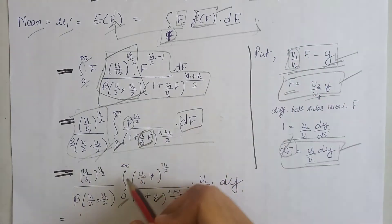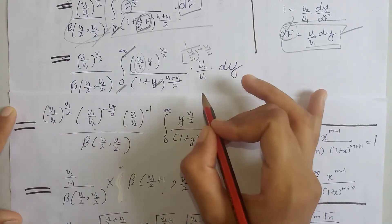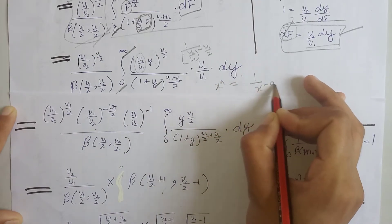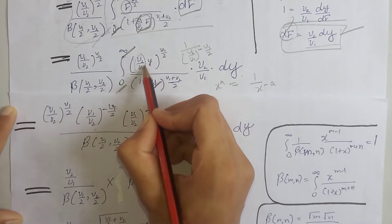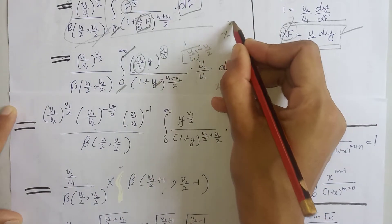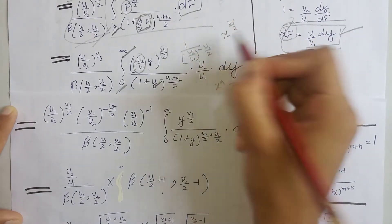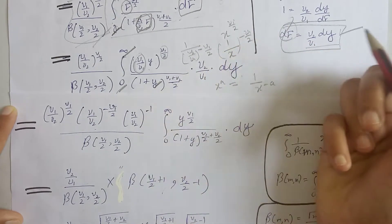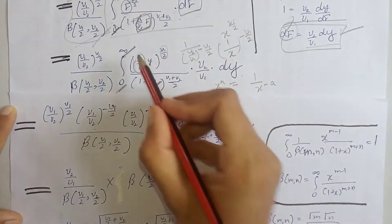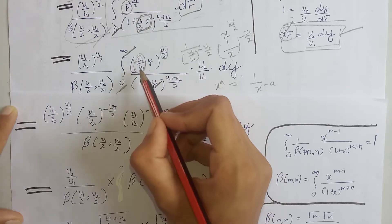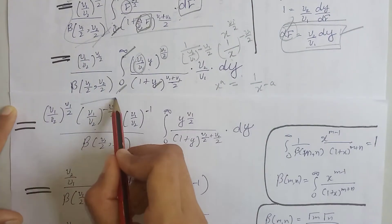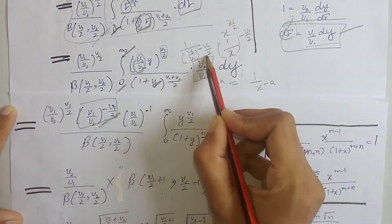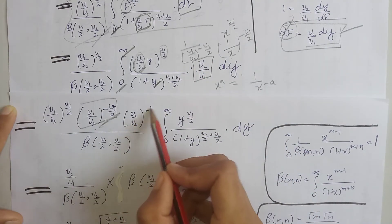We know that x raised to power a equals 1 divided by x raised to power minus a. Similarly, taking x as the base and a as the exponent, we can write x raised to ν₁/2 as 1 divided by x raised to minus ν₁/2. So the reciprocal of ν₁ divided by ν₂ raised to power minus ν₁/2 is written accordingly. Similarly, we write this term as ν₁ divided by ν₂ raised to power minus 1.